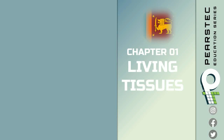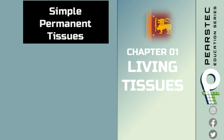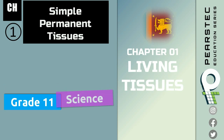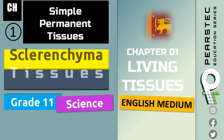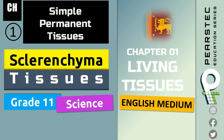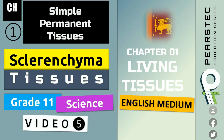Chapter 1 — Living Tissues is what we have been studying. This is Simple Permanent Tissue from Grade 11 Science, English Medium. Sclerenchyma Tissue is what we are going to talk about in this Video No. 5. Let's go and talk about Sclerenchyma Tissues.